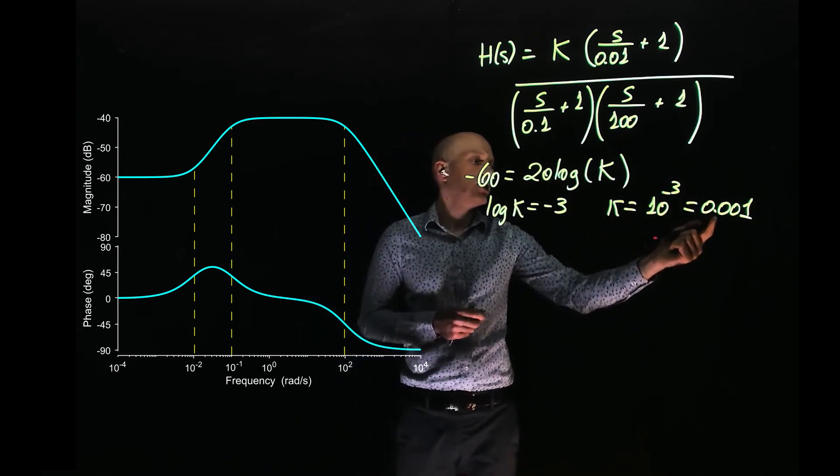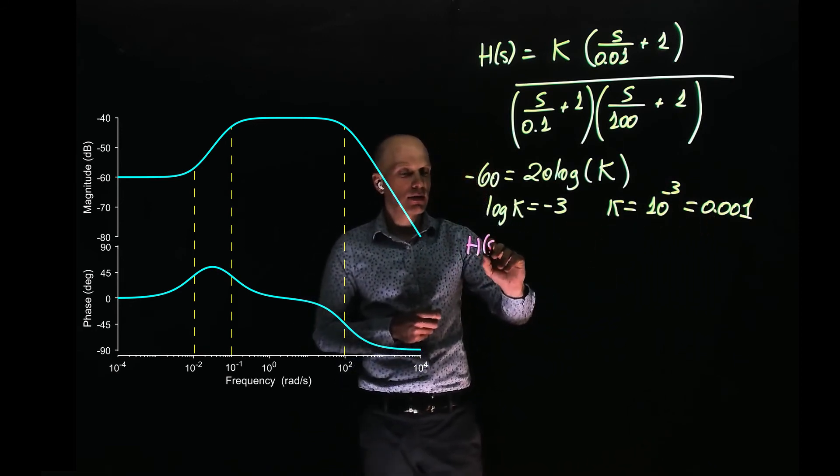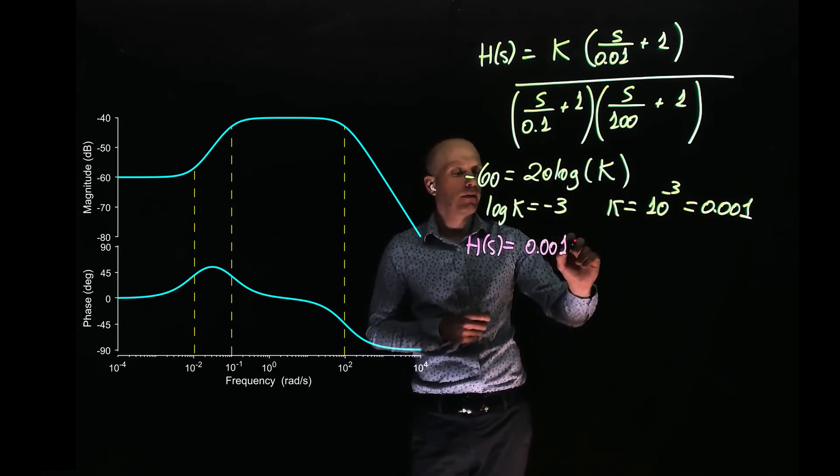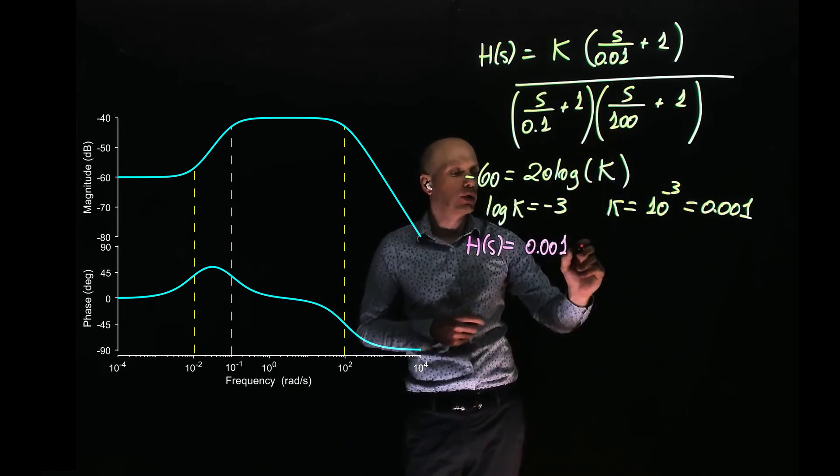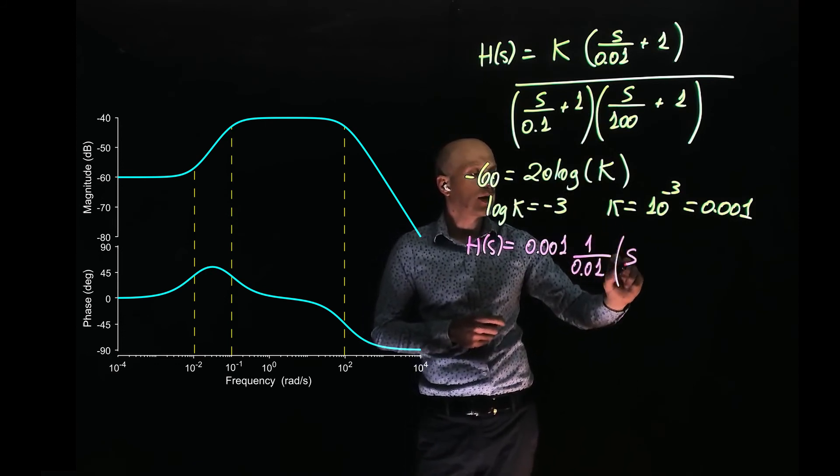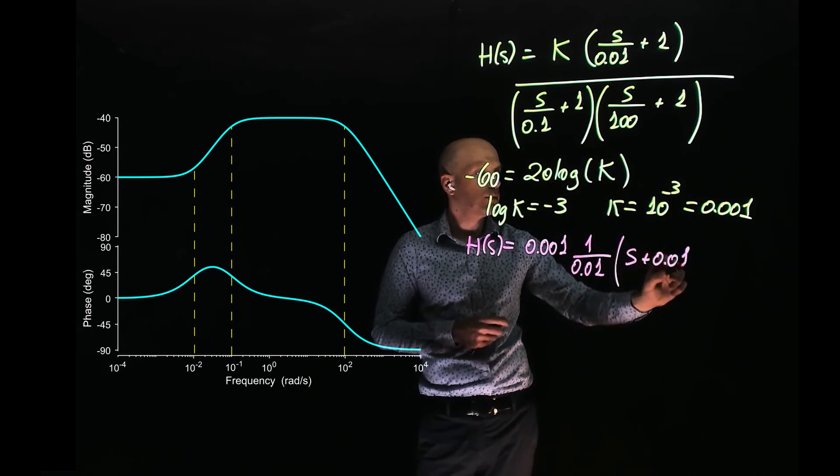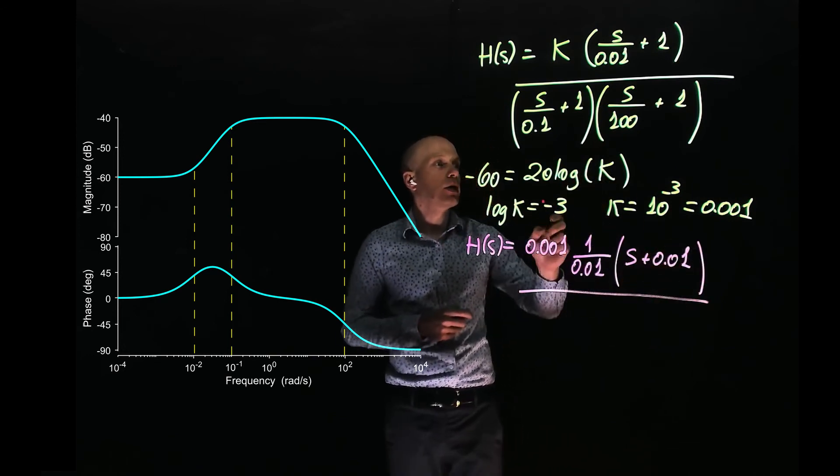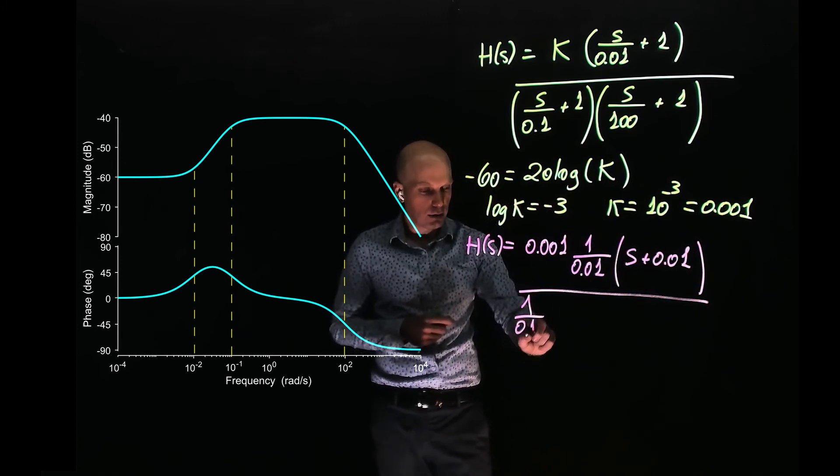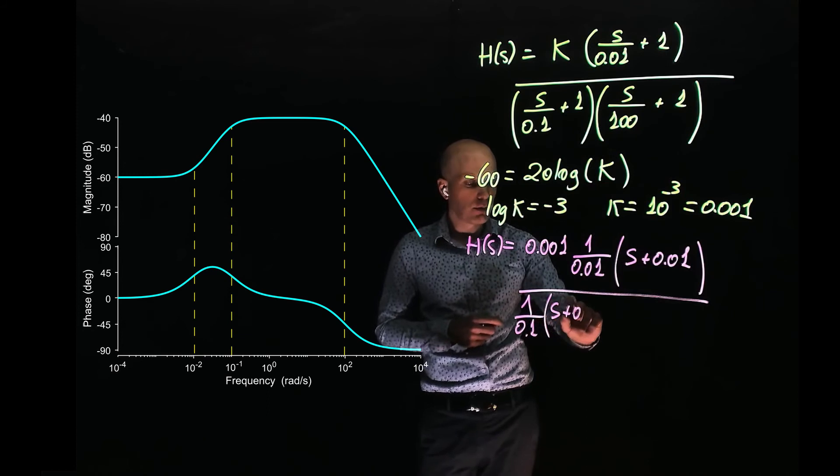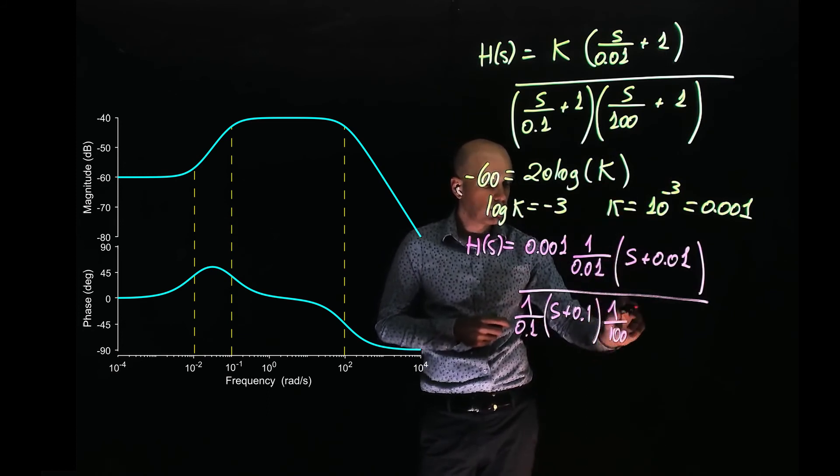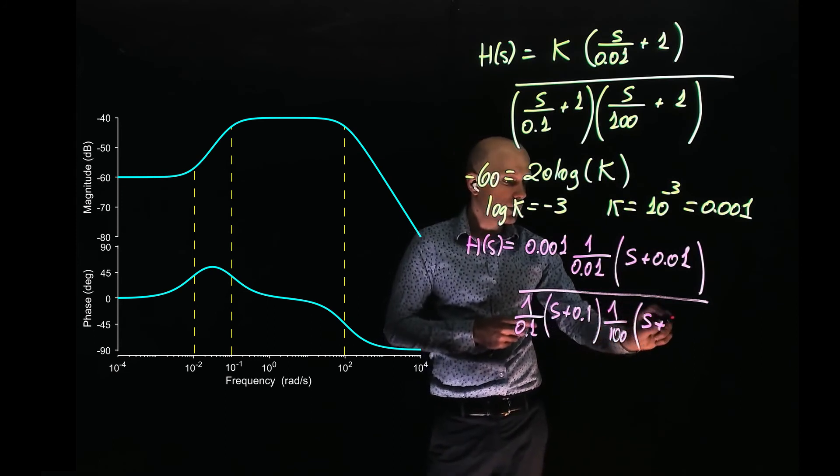We can now replace k with that value, so h of s now is 0.001. We can factor out 1 over 0.01. This gives s plus 0.01. In the denominator, we can factor out 1 over 0.1 to get s plus 0.1, and 1 over 100 to get s plus 100.